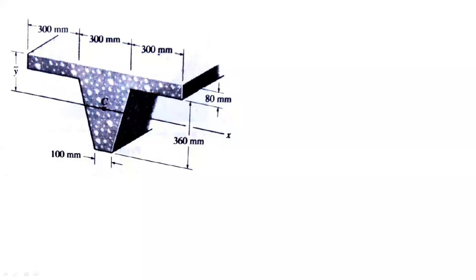Note down the next problem. In this problem, the cross section of a concrete beam is shown and we have to find out the centroid of that cross section. This is the concrete beam and this is the cross section area of that beam. For this cross section, we have to find out the center of gravity.